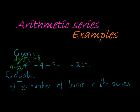Very good. The first question asks me to evaluate the number of terms in the series. We start at 6 and we end—so term 1 is equal to 6, term 2 is equal to 1, and this goes on until we get to term n. We don't know how many terms there are, but this last term is equal to negative 239.